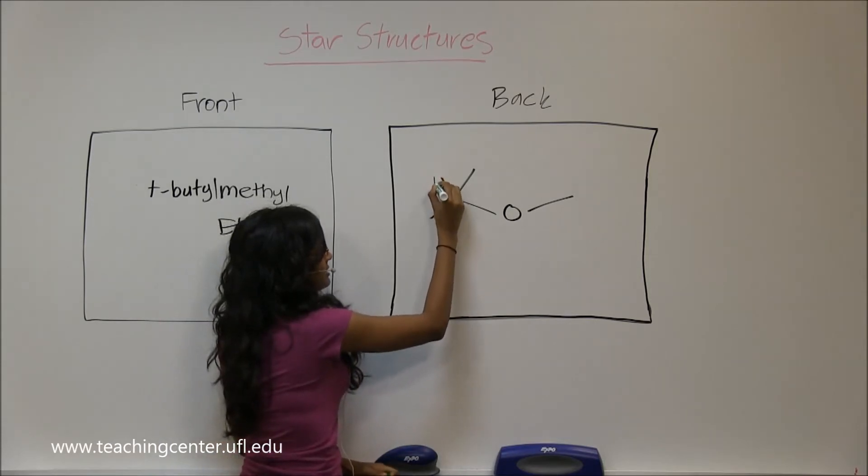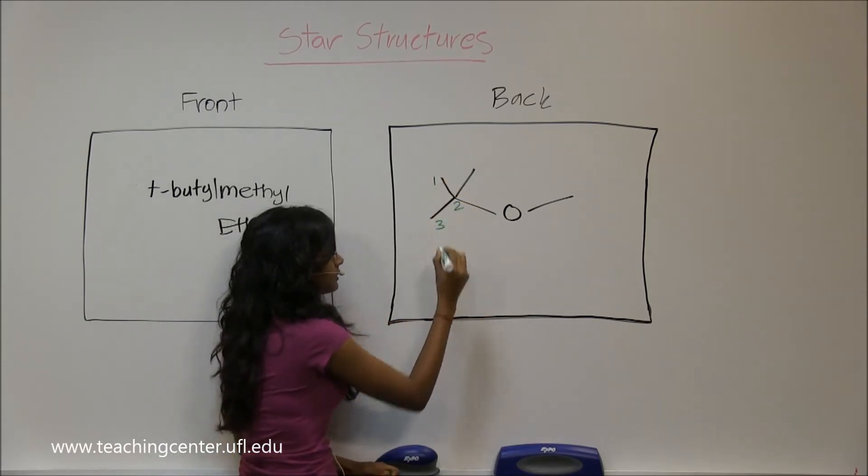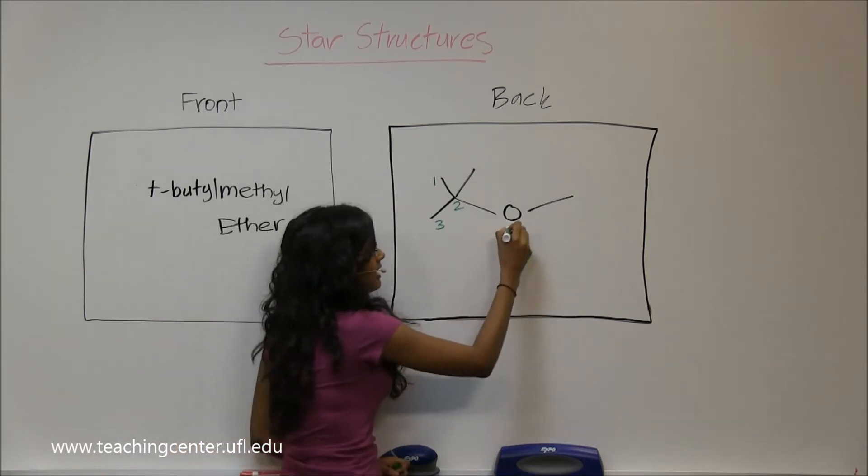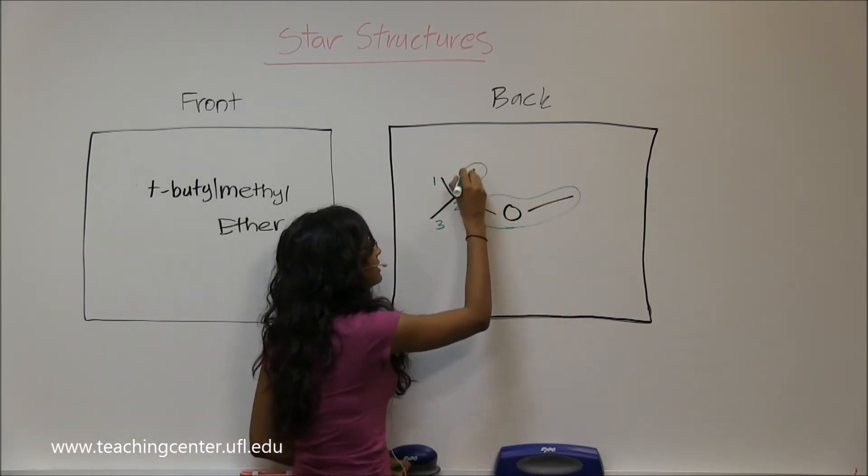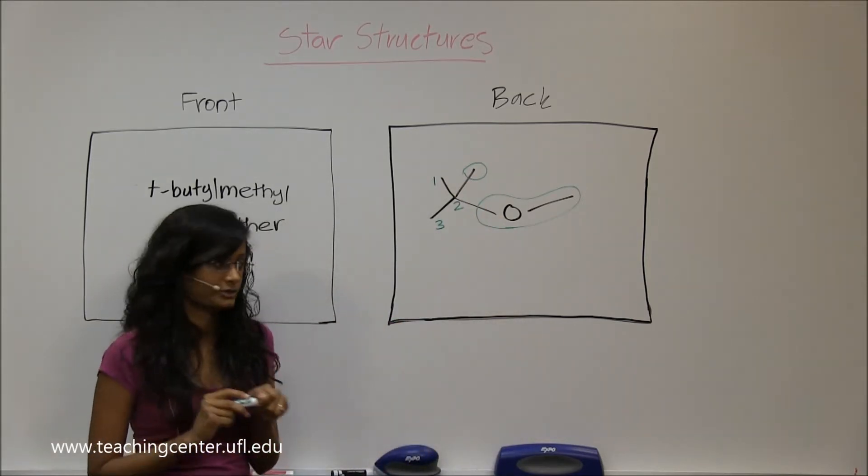So the way you would name it is, longest carbon chain is 3, where you have methoxy as a substituent on 2 and methyl as a substituent on 2.